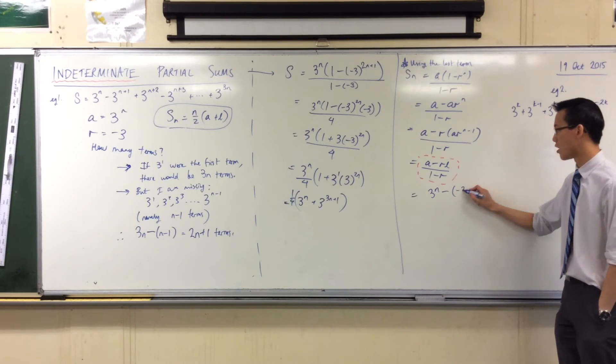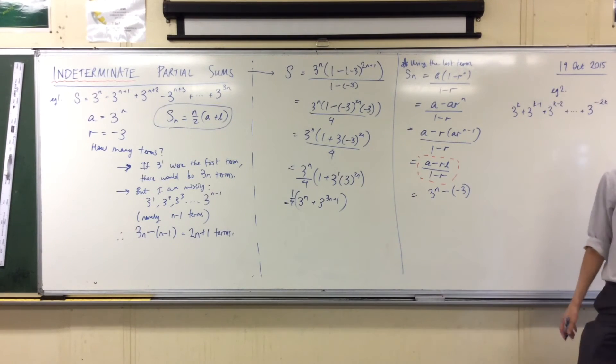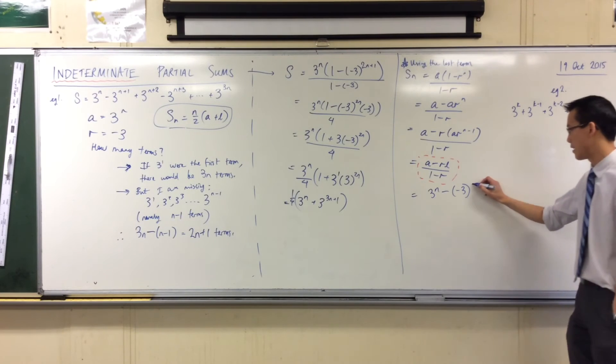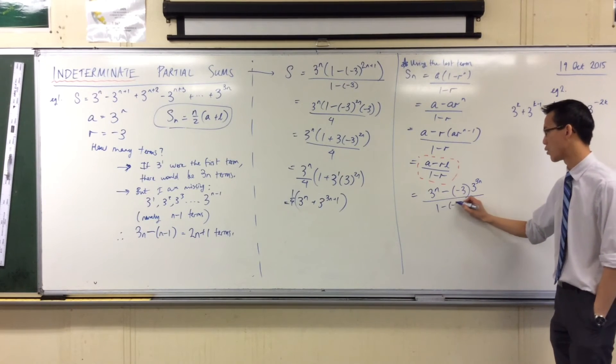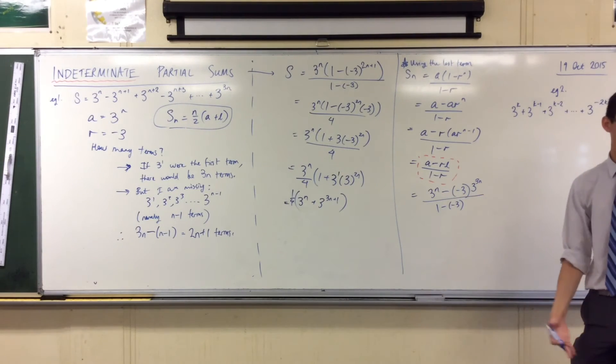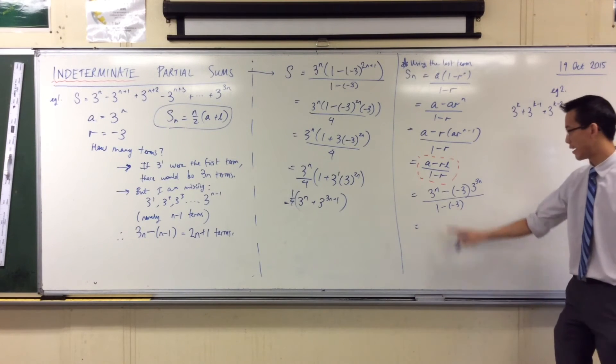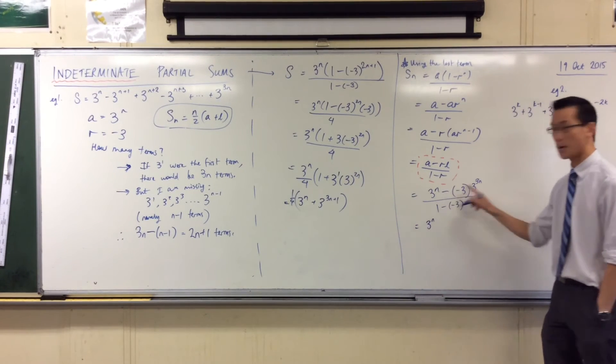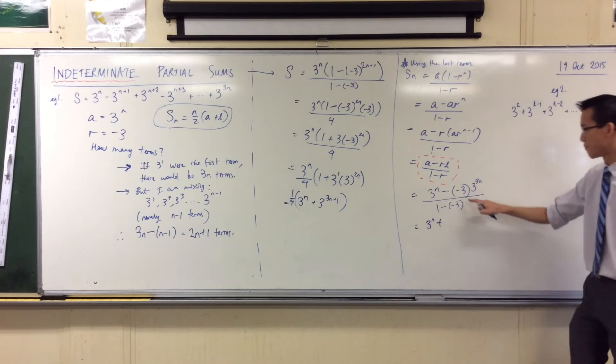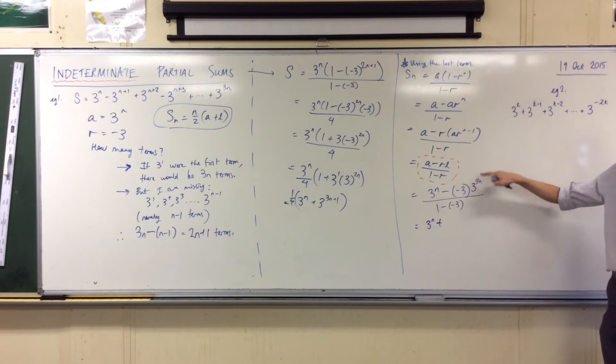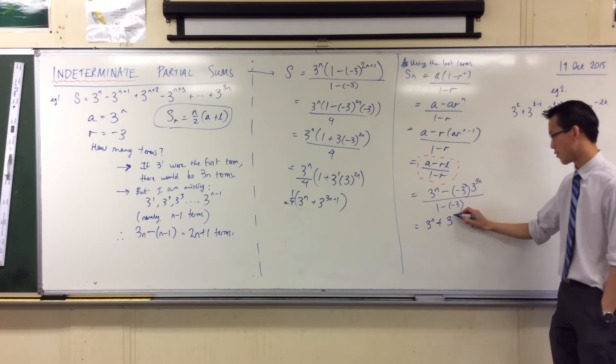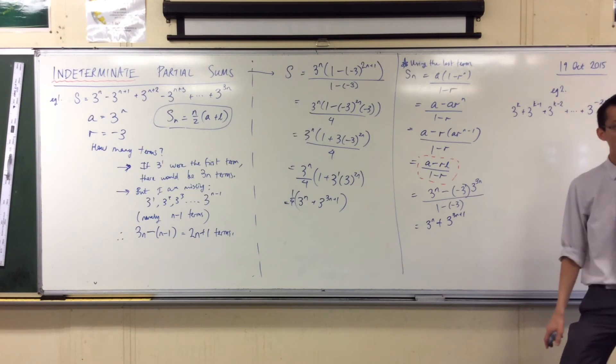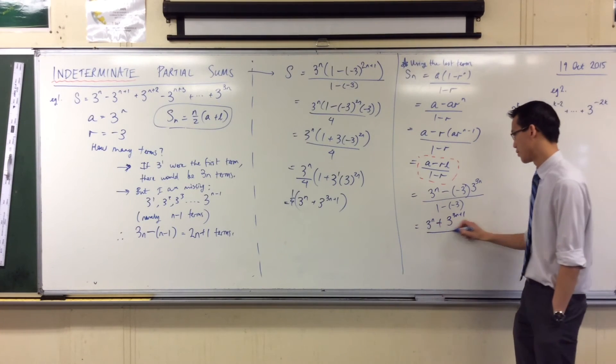3 to the 3n all divided by... now this guy is going to be still one take away negative 3, just like it was before. What have I got? 3 to the n - double negative, it's a double negative. There's a 3 there and there's a 3 to the 3n. What happens to the indices? 3 to 3n minus - this is a 1 - plus 1: 3n plus 1. Does that look familiar? Yeah. All divided by 4.